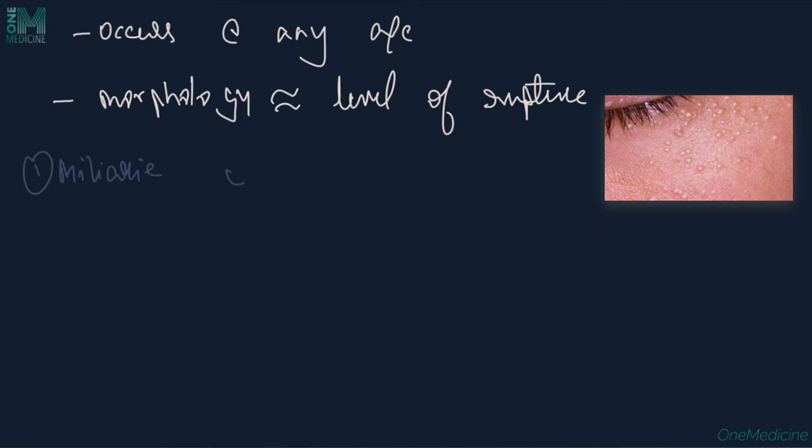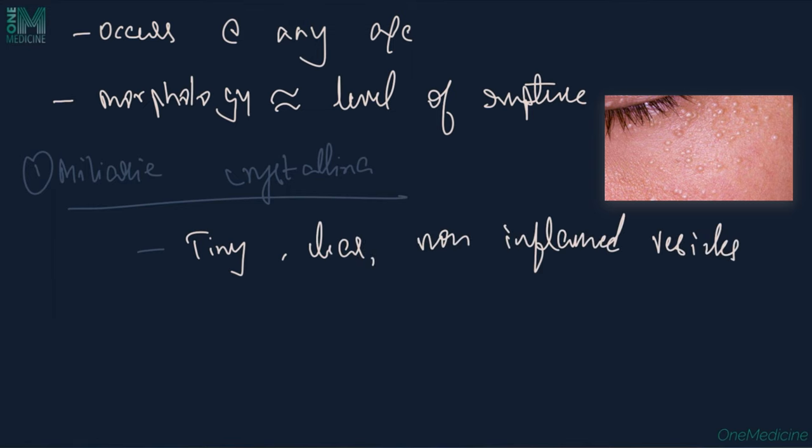Clinical features: Milaria can occur at any age. Morphology of the lesions depends upon the level of rupture. Milaria crystallina presents as tiny, clear, non-inflamed vesicles, usually occurring during episodes of pyrexia or fever.